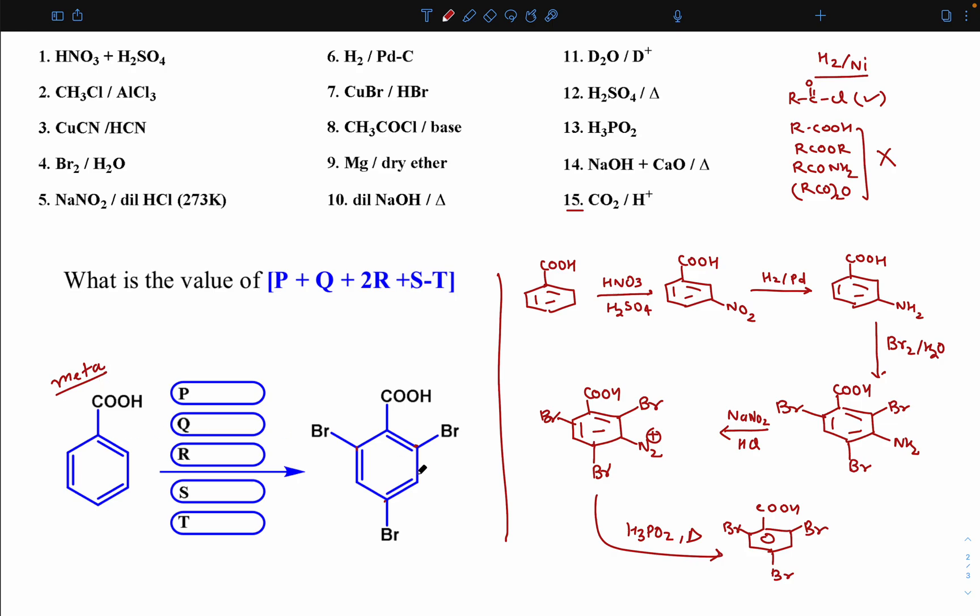Reactant is there, product is there, you have to fill the boxes strictly. Each box should fill, every step major product you have to consider, not more not less. All boxes you have to fill and find this net value of PQRST and that value you have to fill as a numerical integer. That type of format may come, that is why we have created such type of problems in Black Book.